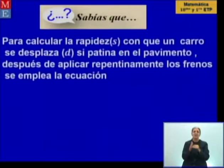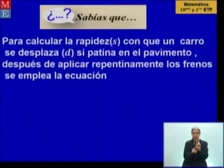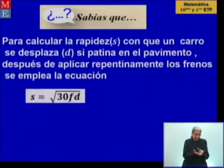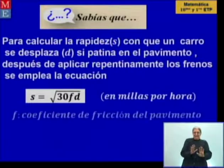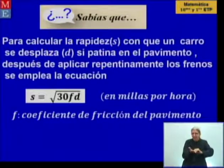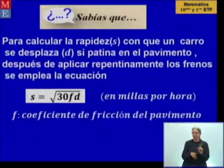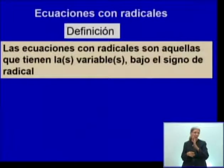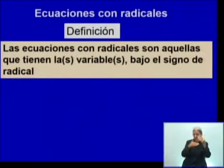Otra aplicación: para calcular la rapidez S con que un carro se desplaza, si patina en el pavimento después de aplicar repentinamente los frenos, se emplea una ecuación en millas por hora, donde F es el coeficiente de fricción del pavimento. Esta ecuación tiene un radical con variables debajo del radical, y le vamos a llamar ecuaciones con radicales. Son aquellas que tienen la o las variables bajo el signo de radical. La definición está en su libro de texto.